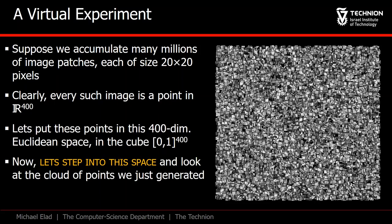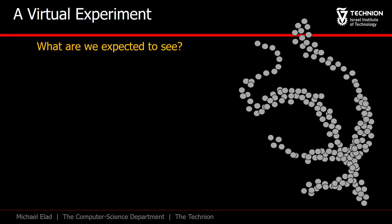Now let's imagine that we walk into R400 and look at this cloud. What are we expected to see? If we could look at this cloud, the first thing that would have drawn our attention is the vast emptiness. This R400 space is expected to be mostly empty.